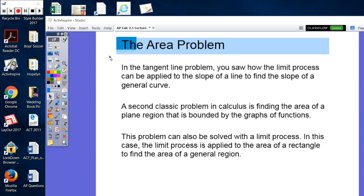Well, it's a little bit different in the area problem, but similar type concept. So in the tangent line problem you saw how the limit process can be applied to the slope of a line to find the slope of a general curve. The second classic problem in calculus is finding the area of a plane region that is bounded by the graphs of functions. This problem can be solved with a limit process. In this case, the limit process is applied to the area of a rectangle to find the area of a general region.